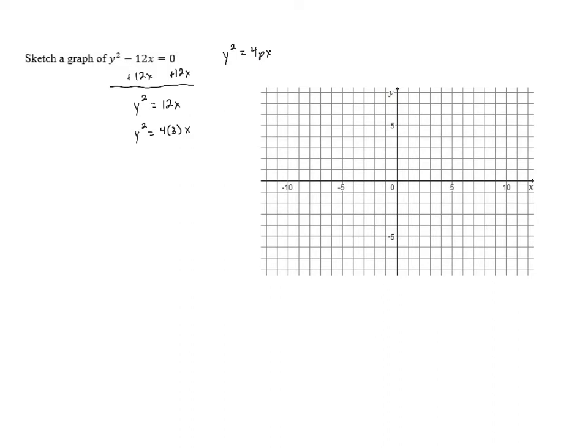Now because the value of p is 3, that tells us that the focus is at the point (3, 0). And we said that the vertex is at the origin. So it's going to be opening to the right, but we have to figure out exactly how we want to draw this.